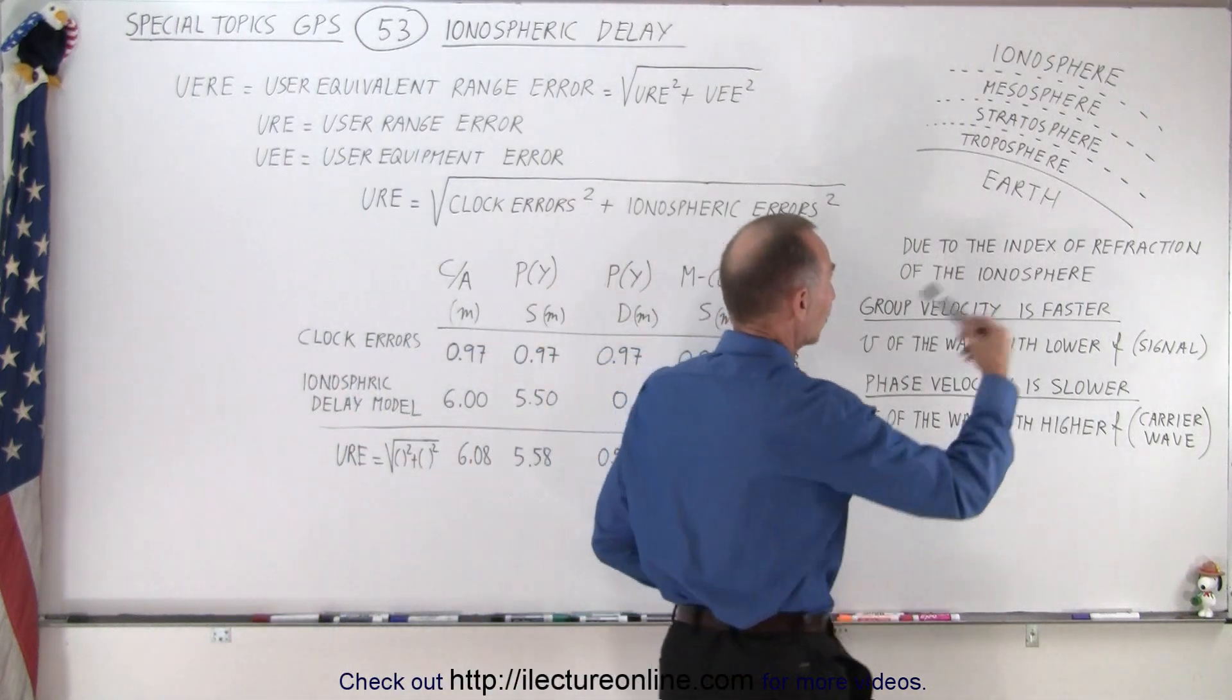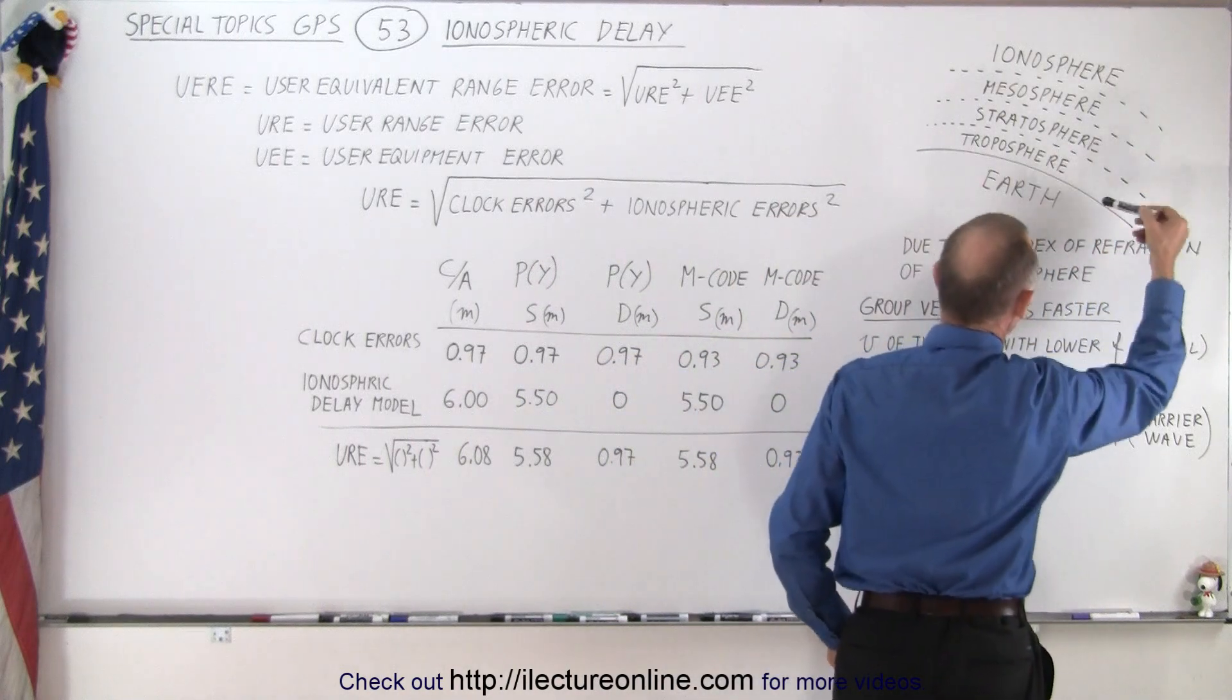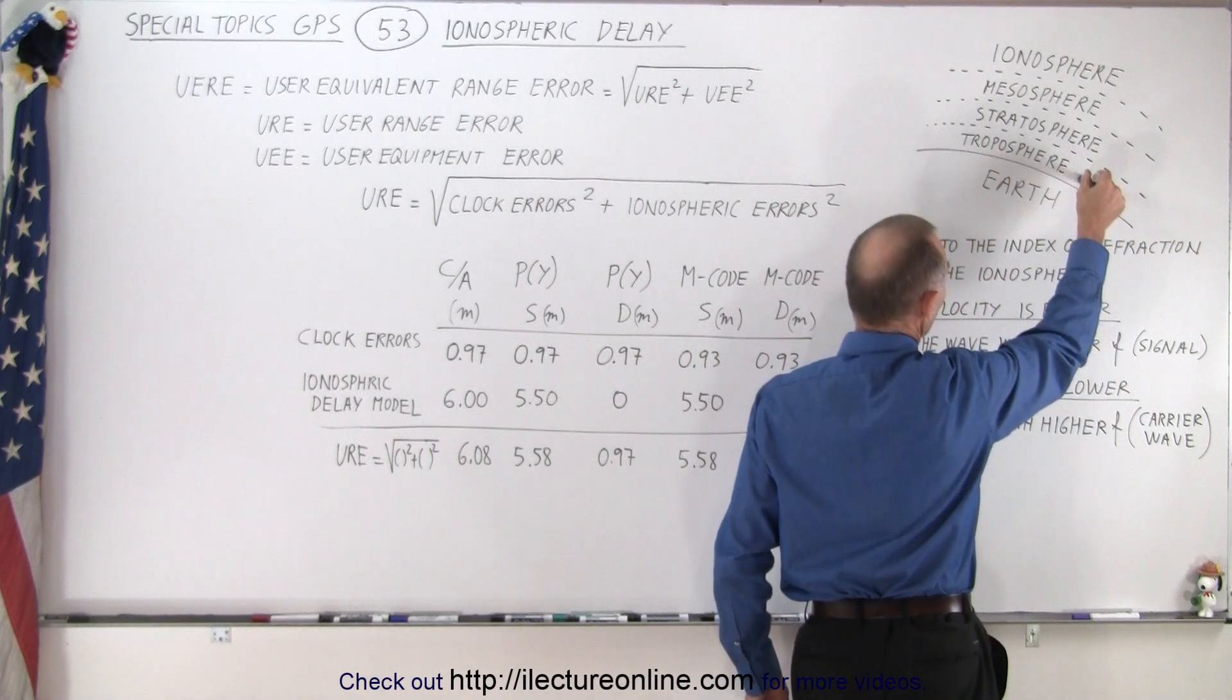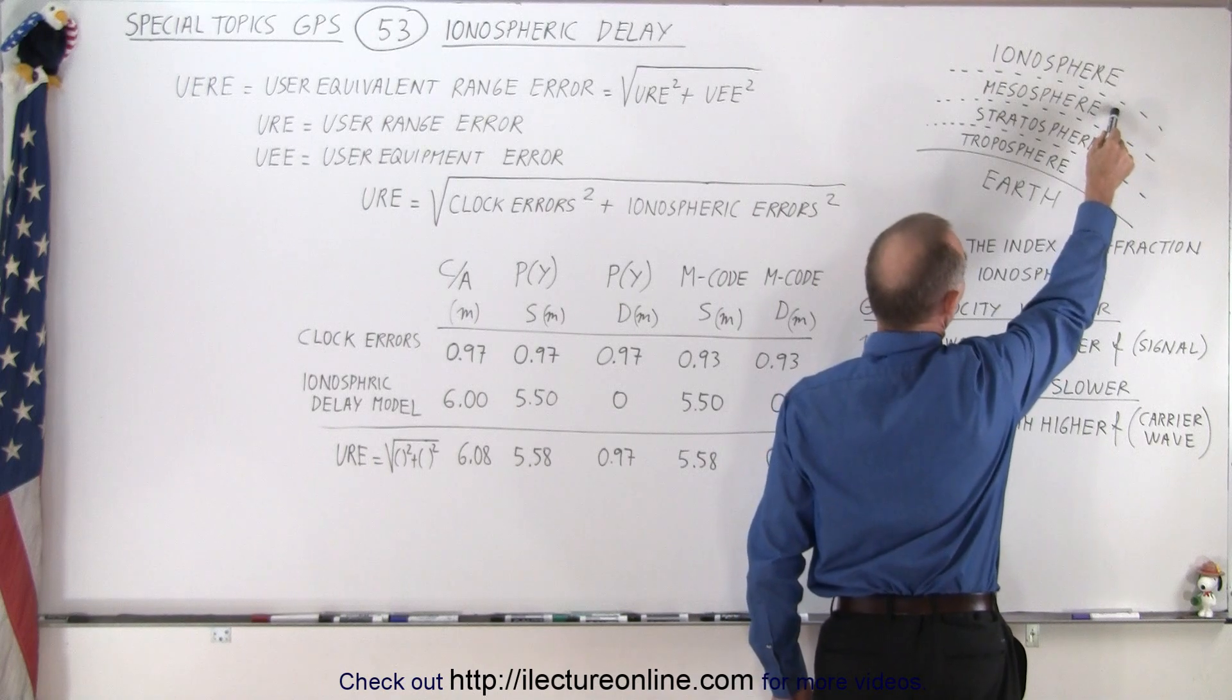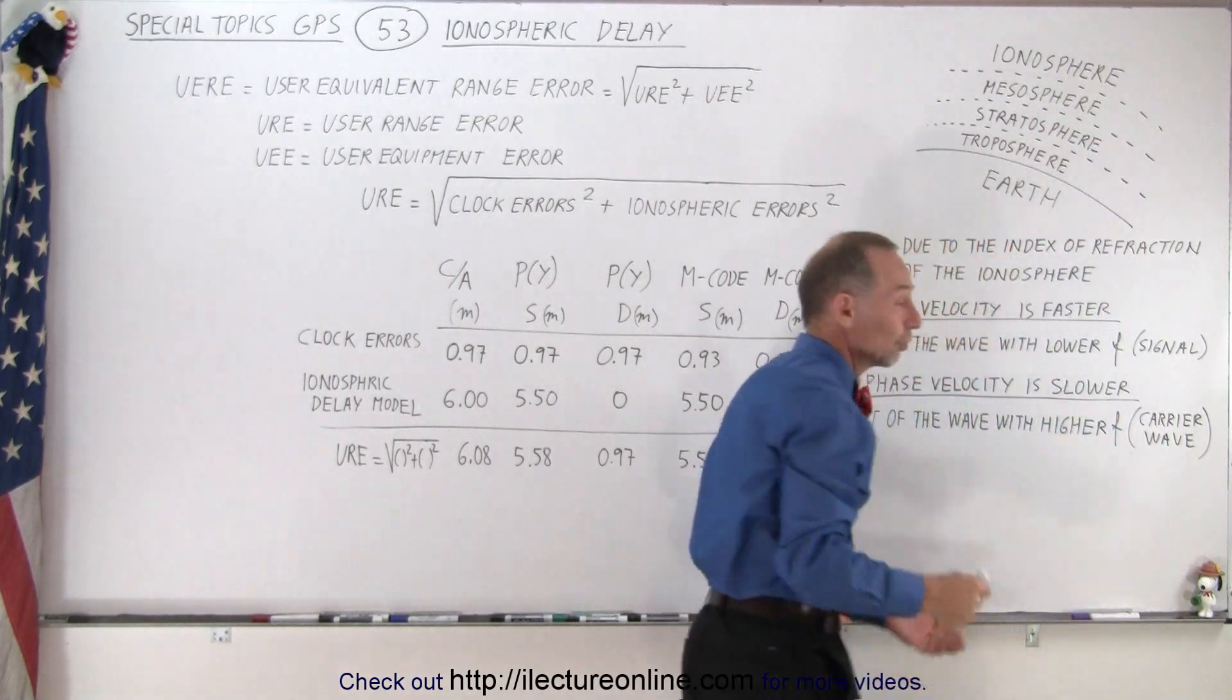As a reminder, the atmosphere of the Earth has essentially four layers. The lower layer is the troposphere, then we have the stratosphere, then we have the mesosphere, and here we have the ionosphere.